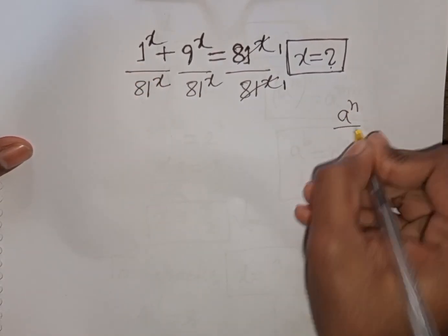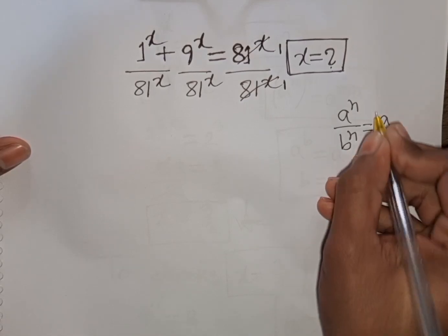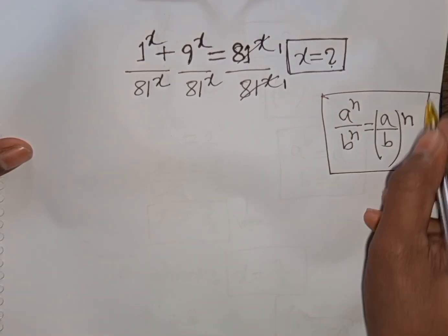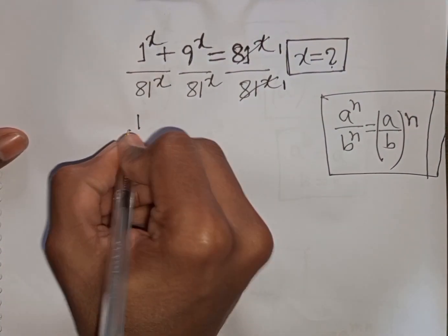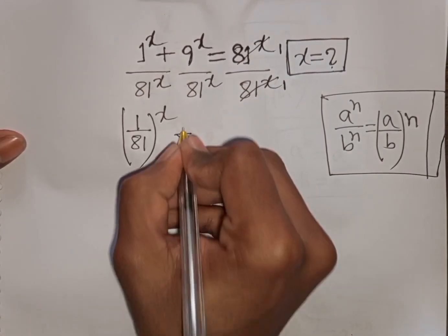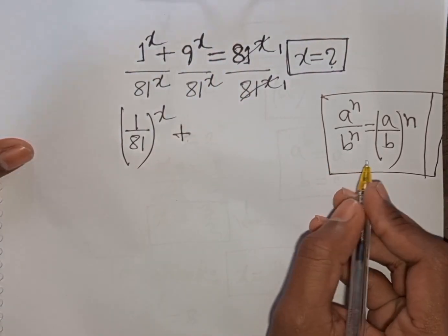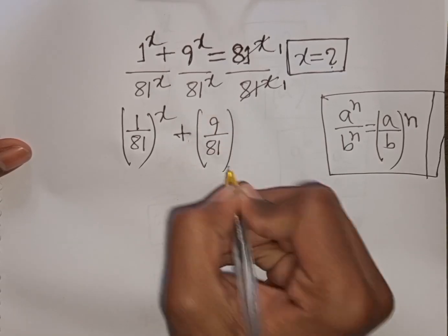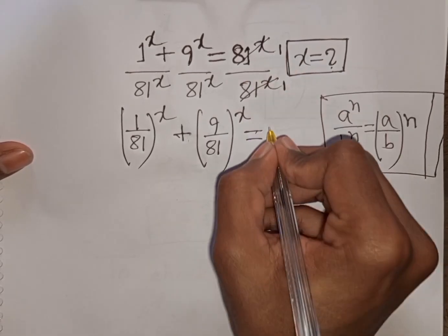According to the formula, a^n over b^n equals (a/b)^n — same power but different base. Applying this formula, we can write (1/81)^x + (9/81)^x = 1 divided by 1, which equals 1.